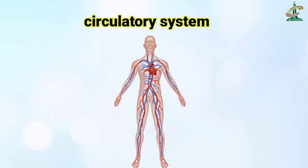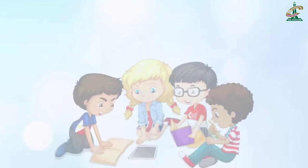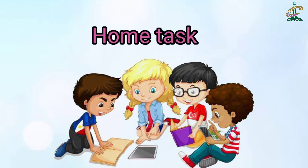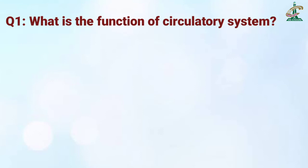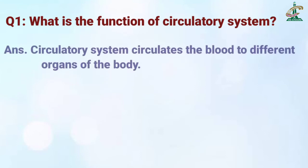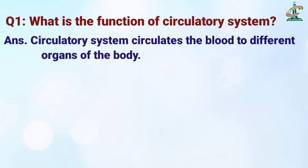I hope you have understood today's lecture में हमारा circulatory system कैसे work करता है. Now students, it's time for your home task. I'm assigning you two questions to memorize. Question number one is: what is the function of the circulatory system? And the answer is: the circulatory system circulates the blood to different organs of the body.